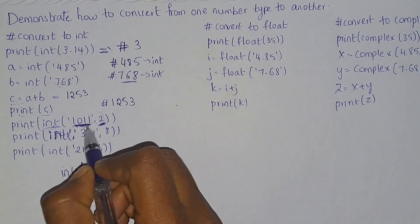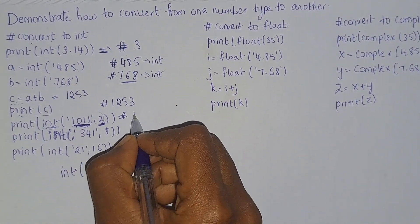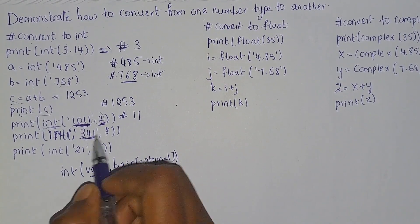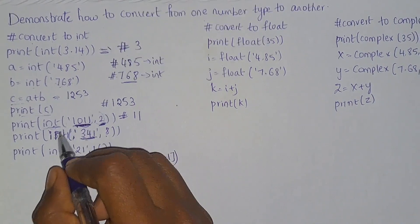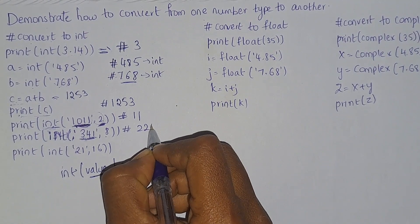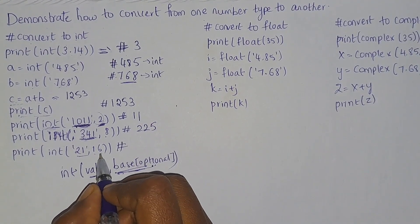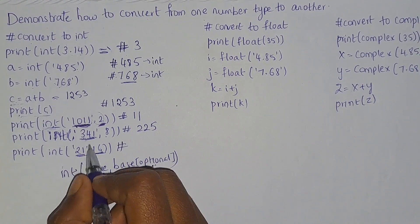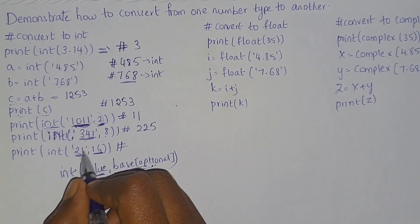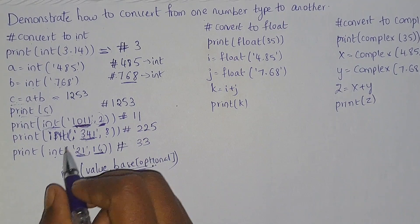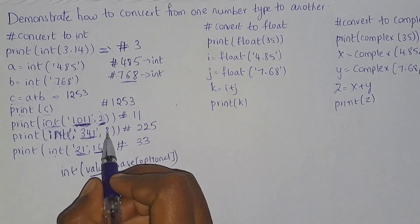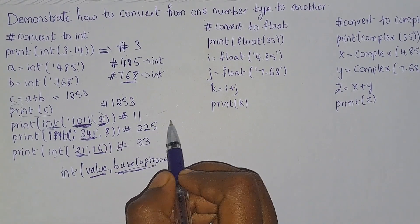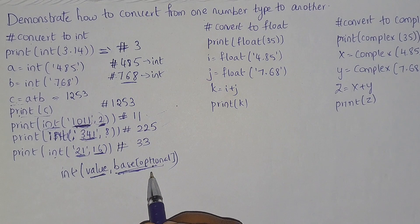If you consider this binary string, its decimal value will be 11. If you take a string whose base is 8, that means this is an octal number — converting this octal number to decimal gives you 225. Similarly, this value is in hexadecimal format, so we give base 16. After converting it to integer you get 33. You can manually verify these binary, octal, and hexadecimal to decimal conversions and the results will match.